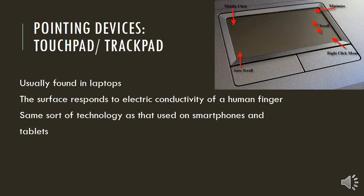Pointing devices also include a touchpad or trackpad — the little pad which is in front of the keyboard on your laptop. These are usually found on laptops. The surface responds to the electrical conductivity of your human finger. Your finger can actually conduct a tiny amount of electricity, and that is how the surface can tell where on the touchpad you are pressing. It's the same sort of technology used on smartphones and tablets.